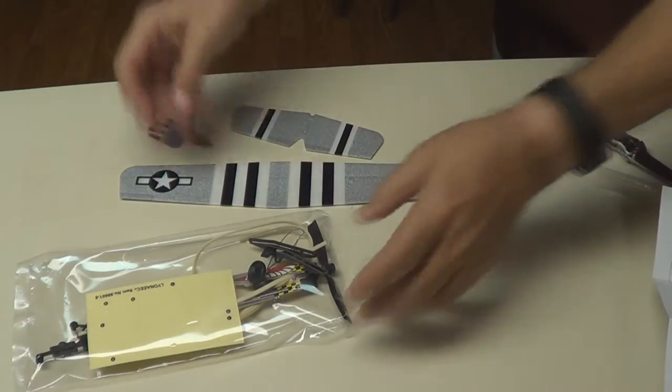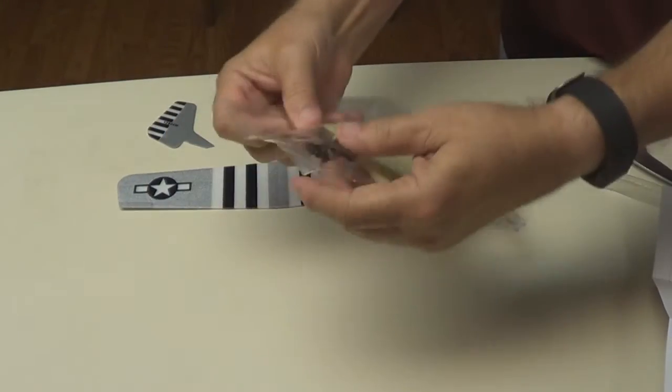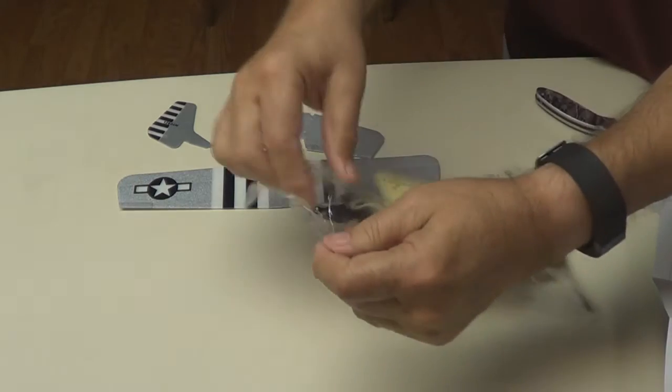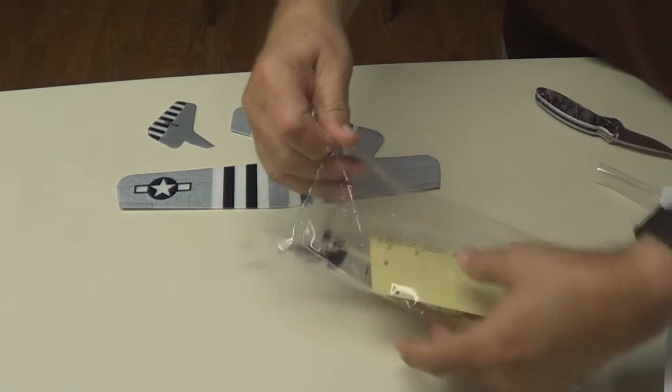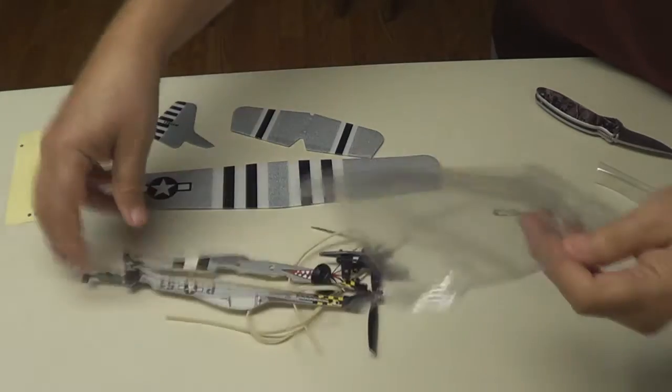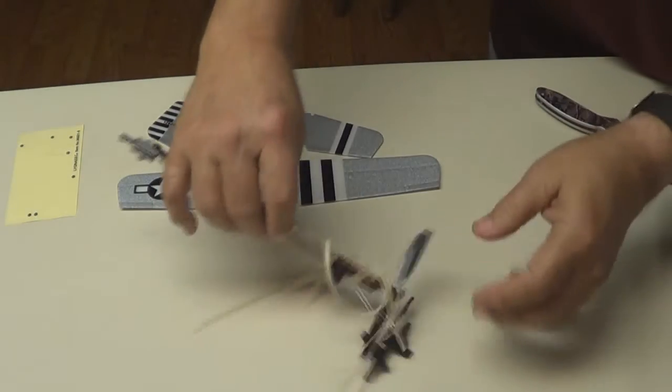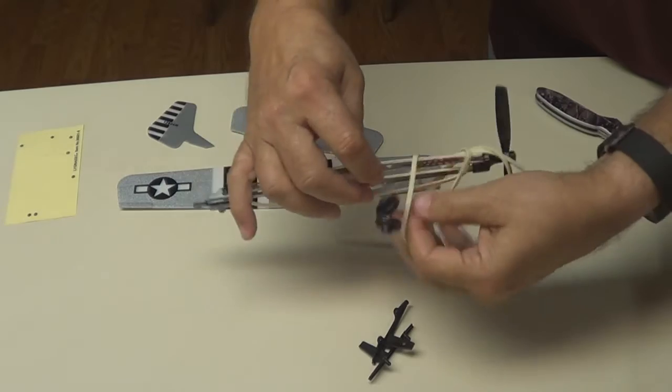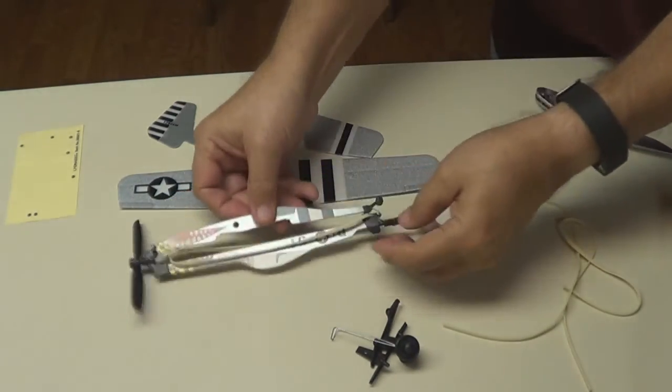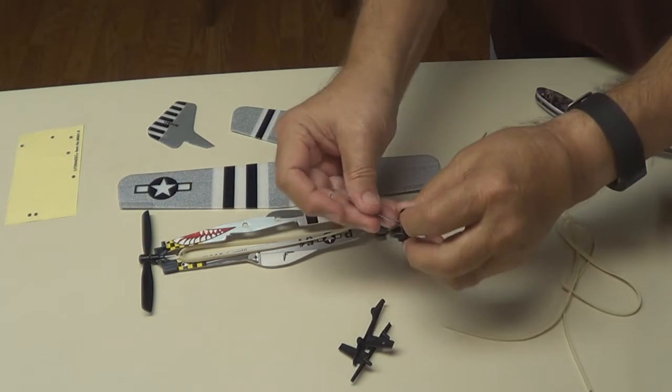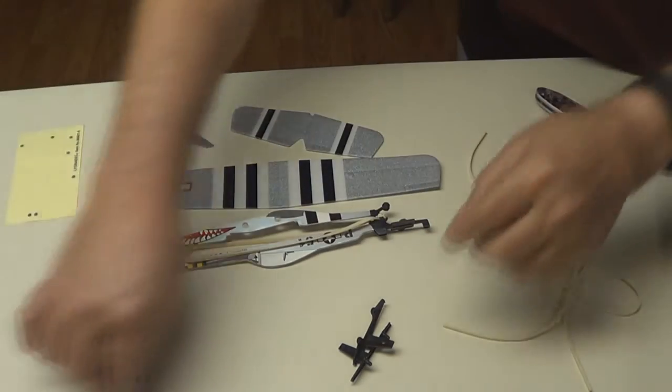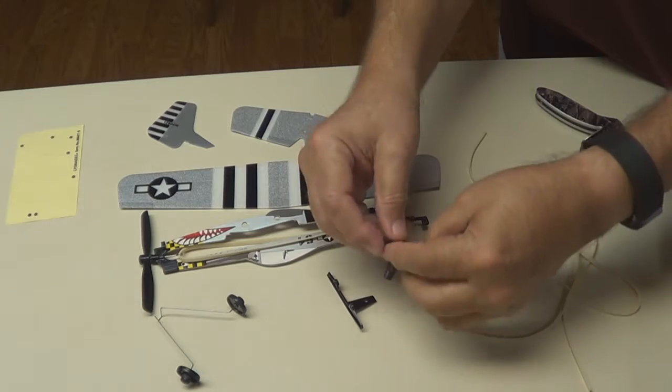There's your elevator, rudder, your wing. There's the tape sticking everything down, fuselage, rubber band, propeller's already attached, there's a spare rubber band, there's your wheels, landing gear. There's your wing mounts. Let's put it together.